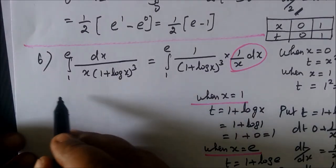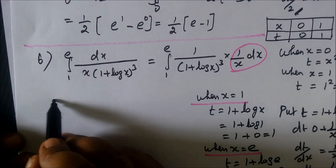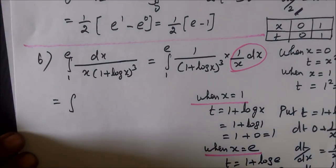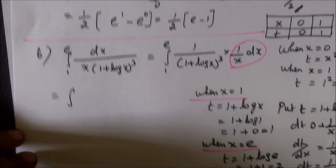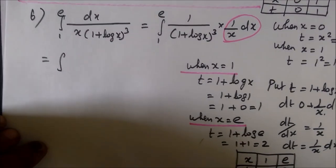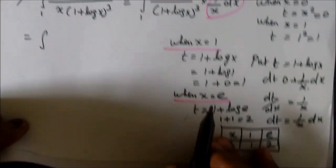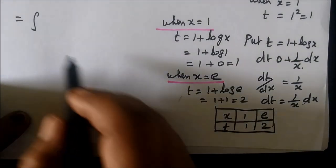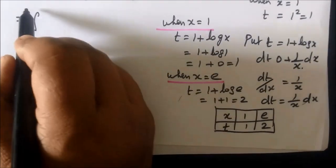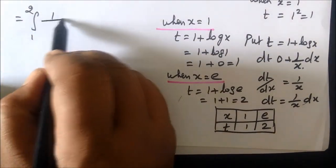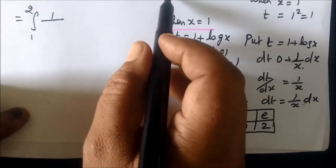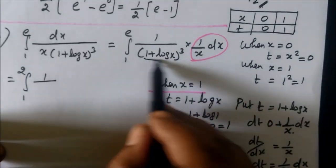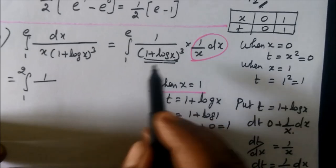Now substitute into the question. The integral becomes integral from 1 to 2 of (1/t³) dt, since 1 plus log x is replaced by t, and (1/x) dx is replaced by dt.